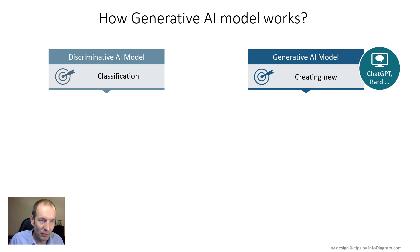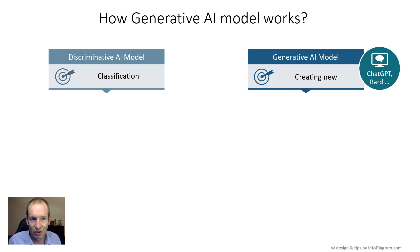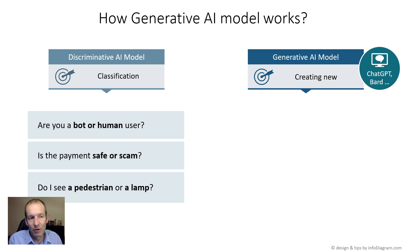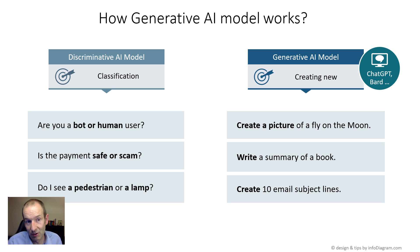Let me show you an example of explaining the two types of AI models. One is discriminative and the other is generative. The generative model is what ChatGPT, BART, and MidJourney use, because they create new instances. Unlike classification models, whose task is to decide — for example, if you are browsing a webpage, are you a bot or a human? Is a payment safe or a scam? When a car's camera sees something, is it a pedestrian I should stop for, or is it a lamp I can safely pass? Those are the questions discriminative AI answers. The generative kind is asked to create a picture, write a summary of a book, or create a new email subject.